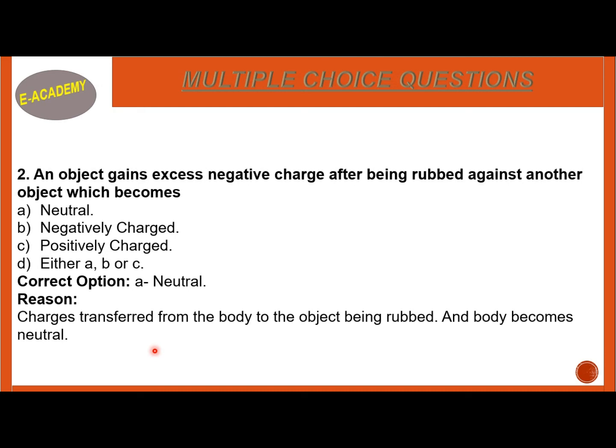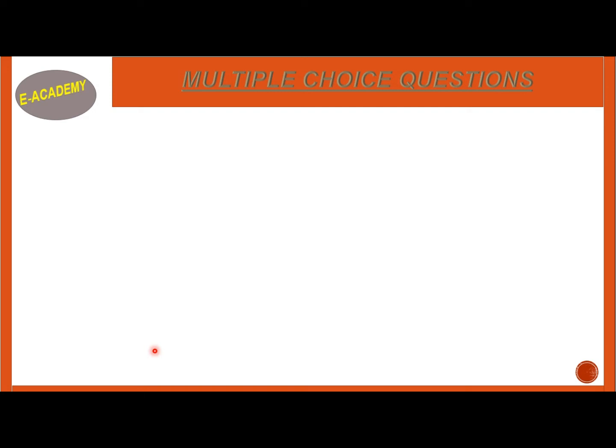The body whose charges are transferred — when we rub it against another body, those charges transfer to the other body. The body being rubbed will become negatively charged, and the body we are rubbing against will become neutral.